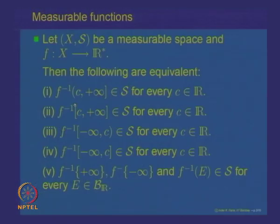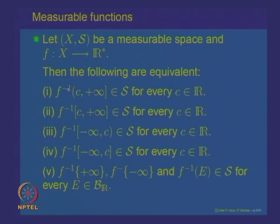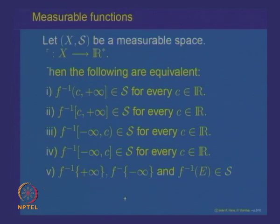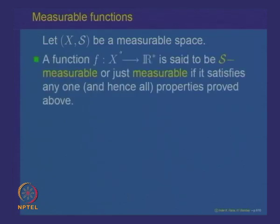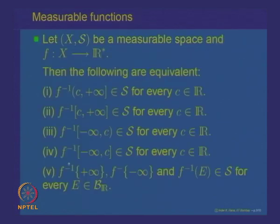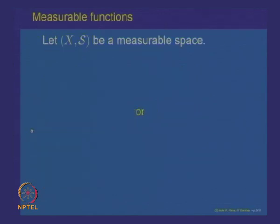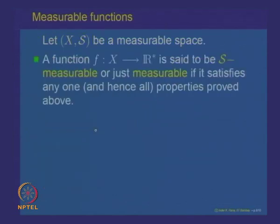The converse — that condition 5 implies any of 1–4 — is obvious because every interval is a Borel set. So we have proved the theorem: for a function F defined on X taking extended real values, all five conditions are equivalent. A function which satisfies any one of these conditions is called a measurable function.